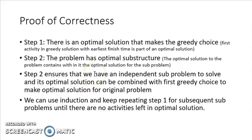To summarize the proof of correctness: Step 1 is to show that the first greedy choice is made by an optimal solution. Step 2 is to show that the optimal solution to the problem contains within it the optimal solution for the sub-problems. Step 2 guarantees that we have an independent sub-problem to solve after making our first greedy choice, and the optimal solution of that sub-problem can be combined with the first greedy choice to produce an optimal solution for the original problem. We can also use induction, repeating Step 1 for subsequent sub-problems until no activities remain.